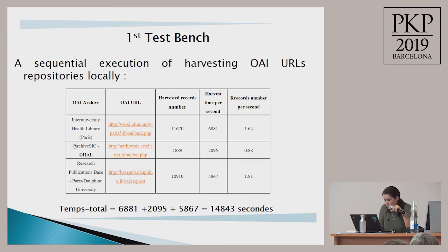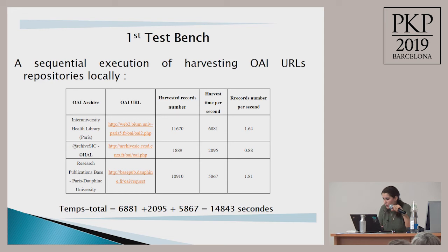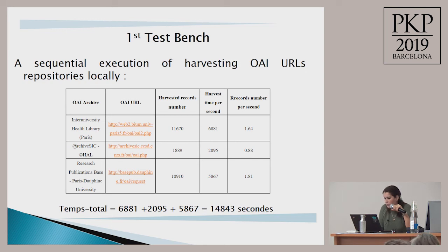In the first test bench, we tested a sequential or classical execution of harvesting OAI URLs repositories by harvesting the number of records contained in each OAI archive. The total harvest time is the sum of the times of each repository harvested.